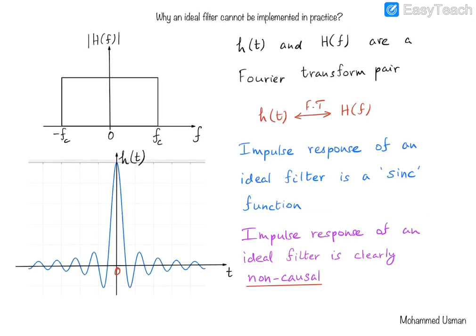The next piece of information we want to understand is the relationship between the frequency response and the impulse response in general. From our analysis of signals and systems and from the theory of Fourier analysis, we know that the impulse response h(t) and the frequency response H(F) are a Fourier transform pair. Taking the Fourier transform of the impulse response gives us the frequency response and vice versa. We have a rectangular pulse shape in the frequency domain, and the corresponding time domain representation is a sinc function.